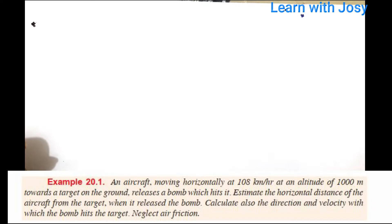An aircraft moving horizontally at 108 km per hour at an altitude of 1000 meters towards a target on the ground releases a bomb which hits it. Estimate the horizontal distance of the aircraft from the target when it releases the bomb. Also calculate the direction and velocity with which the bomb hits the target. Neglect air friction.